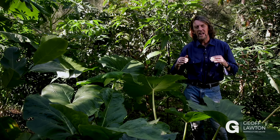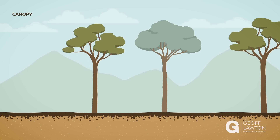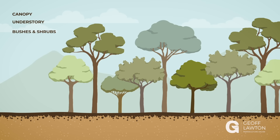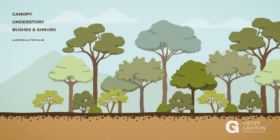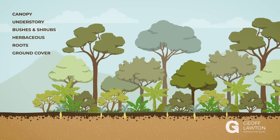All forests have layers. You start off with a canopy layer — that's the top of the forest. Then you have understory layers, and under those you have bush and shrub layers, going down to herbaceous layers, which are non-woody plants. Then you have a root yield — plants that have large starchy roots. And on the ground you have ground covers. You also have a vertical layer of climbers.